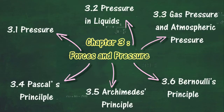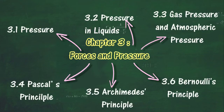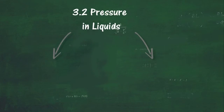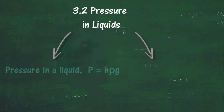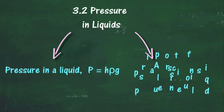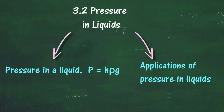In Section 3.2, we will learn about Pressure and Liquids. At the end of this section, you should be able to relate depth to pressure in a liquid, relate density to pressure in a liquid, and explain pressure in a liquid and state that P = Hρg. You should also describe applications of pressure in liquids and solve problems involving pressure and liquids.